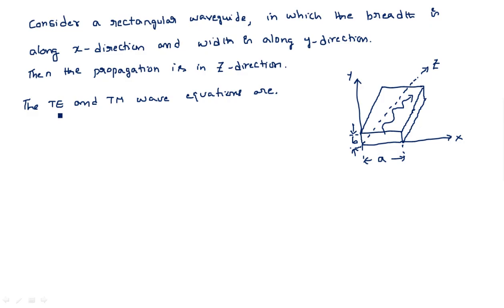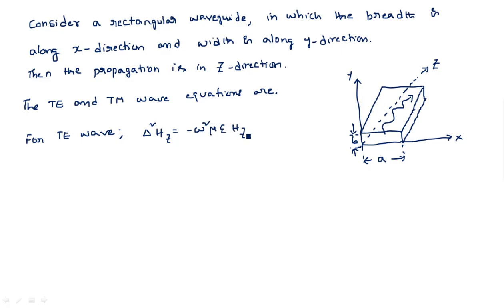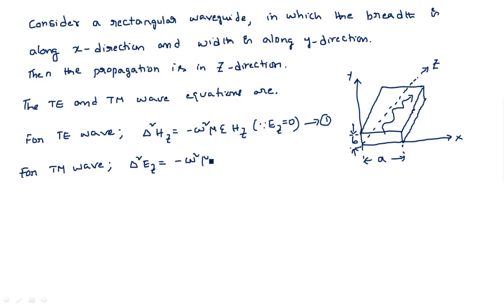Whichever mode you take — for TE, E is there in the name, so Ez equals zero. In TM, H is there, so Hz equals zero. Z is the direction of propagation. For the TE wave, the equation is: ∇²Hz = −ω²με·Hz, since Ez = 0. Take this as equation 1. For the TM wave: ∇²Ez = −ω²με·Ez, since Hz = 0. Take this as equation 2.